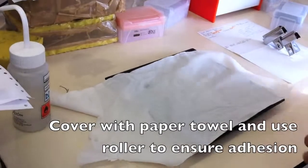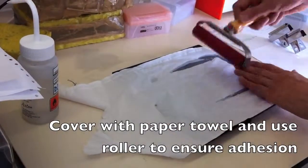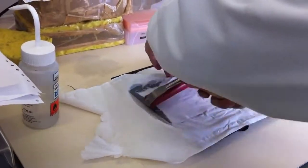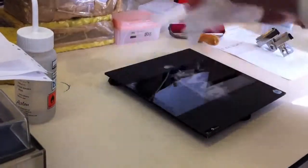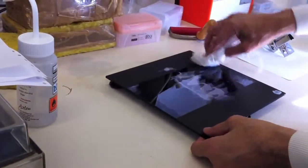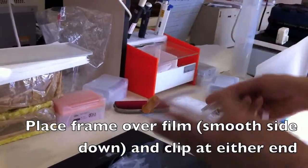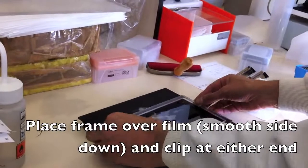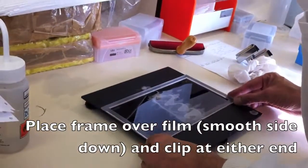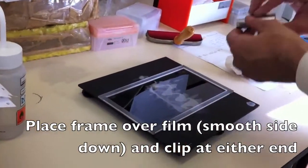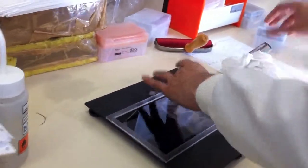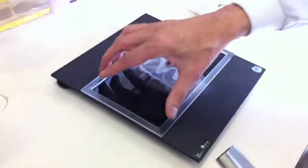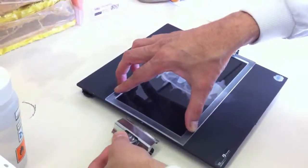Cover with a paper towel to absorb any excess methanol solution and use the roller to ensure all air bubbles have been removed. Place a plastic frame over the gel bond film that you've just applied, making sure the smooth side of the frame is facing downwards. Attach a metal clip to each end to ensure that the frame stays in place.